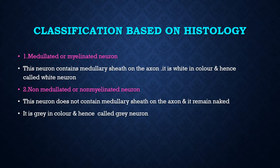Next we move on to classification of neuron based on histology. This is again divided into two types. One is medulated, otherwise called myelinated neuron — if an axon is covered by a myelin sheath or medullary sheath, such type of neuron is said to be medulated or myelinated neuron. It will be white in color, hence called white neuron. Second type is non-medulated or non-myelinated neuron — the axon won't be covered by any myelin sheath, and this neuron will be gray in color, called gray neuron.